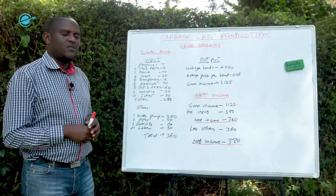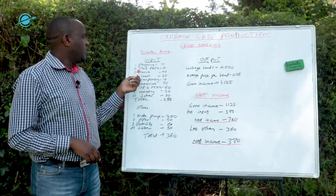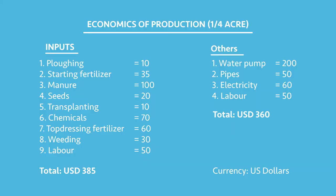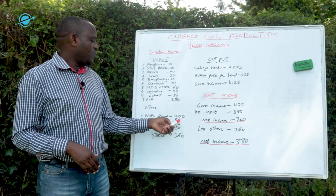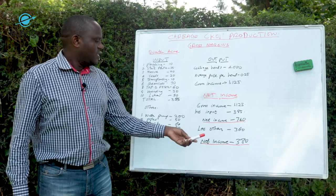When you look at the cost of inputs, you may find the manure comes from your own homestead, saving you $100. And if you yourself provide the labor, you save there too, so the total input cost may be much less. Also, once you buy the water pump and pipes — a one-off purchase of $250 — for subsequent farming seasons you still have them, so that won't be a recurring cost.